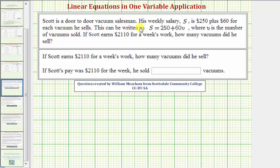Scott is a door-to-door vacuum salesman. His weekly salary, S, is $250 plus $60 for each vacuum he sells. This can be written as an equation as S equals 250 plus 60V, where S is the weekly salary and V is the number of vacuums sold.